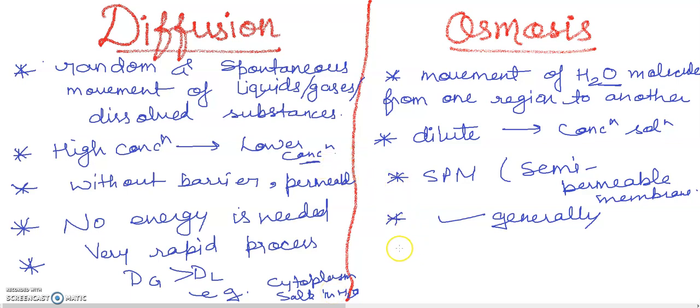Osmosis, if we see, is a slow process. If we compare, osmosis in comparison is a slow process comparatively. An example is the movement of water molecules from one cell to another in plants.